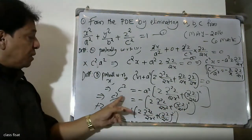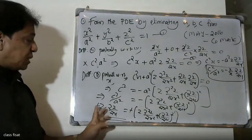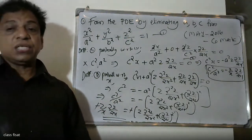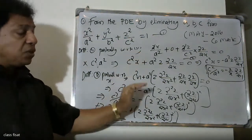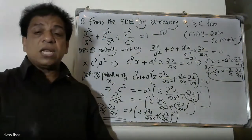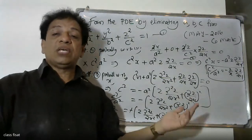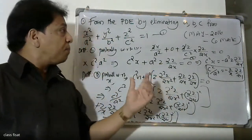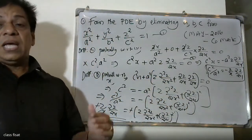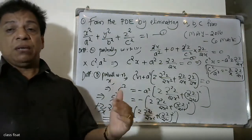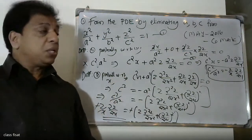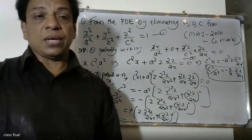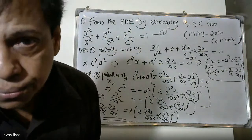Minus and minus cancel, giving us the partial differential equation. We have variables x, y, z and we eliminate constants a, b, c to obtain the partial differential equation. This completes the elimination of a, b, c from the given equation.